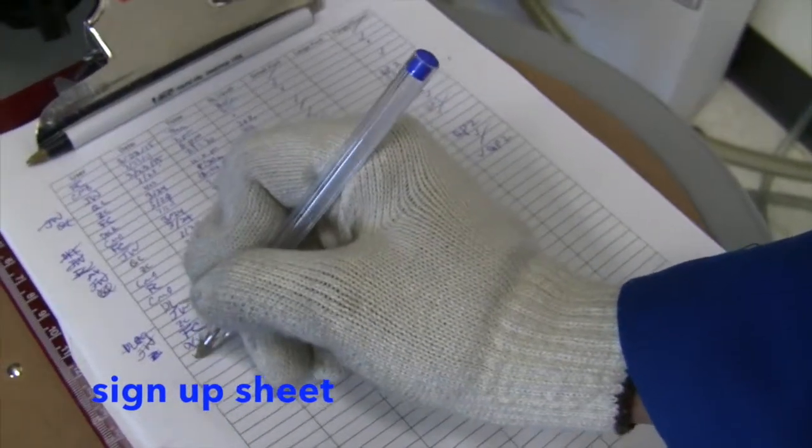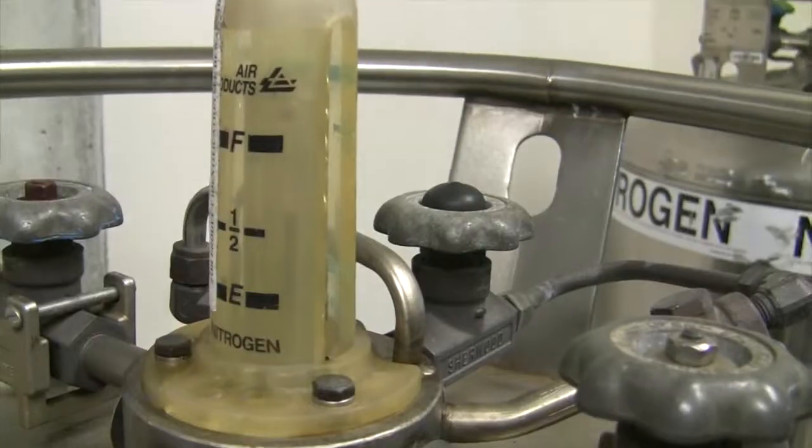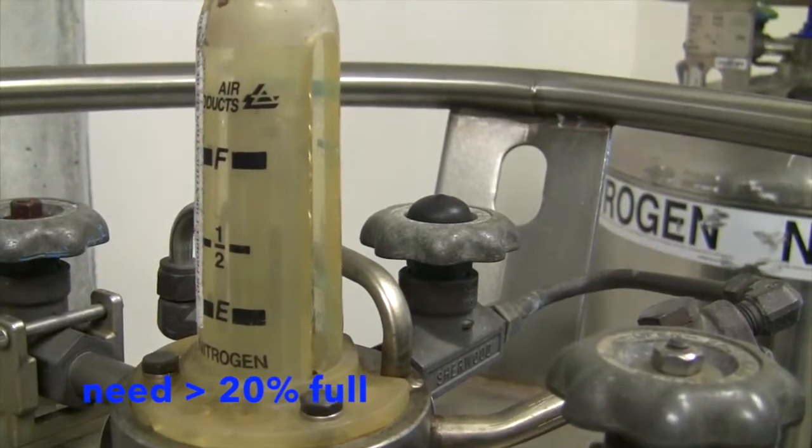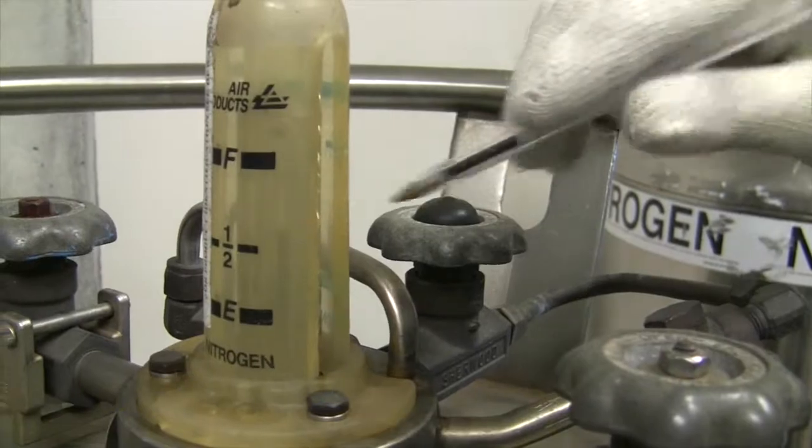First of all, sign up and fill out the log sheet. Check the nitrogen doer to make sure there's greater than 20% nitrogen gas.